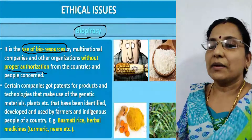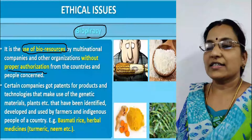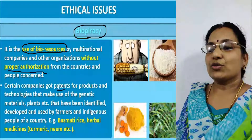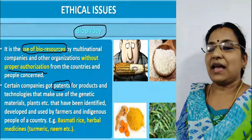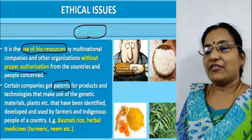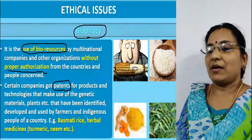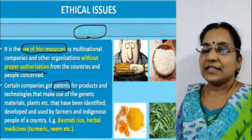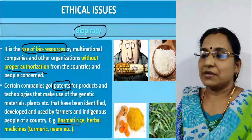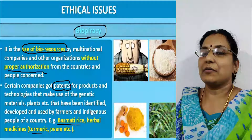Certain companies have obtained patents for products and technologies that make use of genetic materials and plants that have been identified, developed, and used by farmers and indigenous people of a country. Examples include basmati rice and herbal medicines like turmeric and neem.